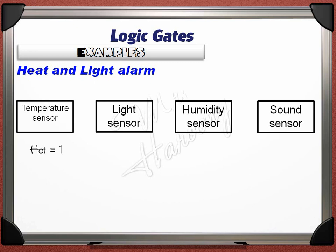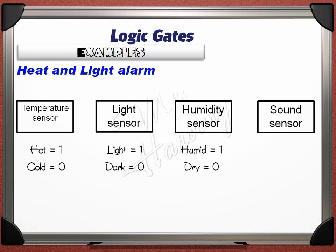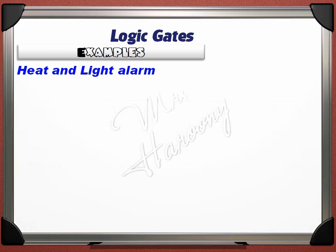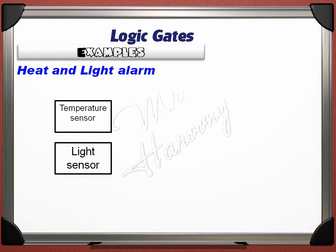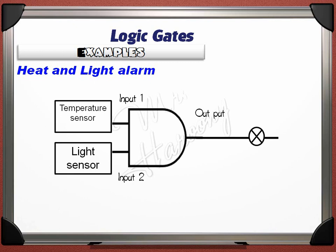A humidity sensor gives 1 if the surroundings are humid and 0 if dry. A sound sensor gives 1 if loud and 0 if quiet. To construct the heat and light alarm, a temperature sensor and a light sensor are each connected to one input of an AND logic gate. The output of the AND gate feeds the bulb circuit — the alarm. If cold and dark, both sensors give 0 and the AND gate gives a 0 output, so the bulb will not light.